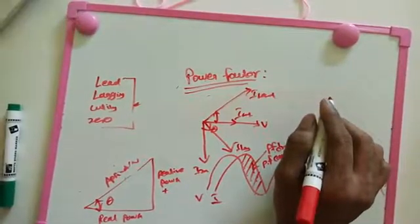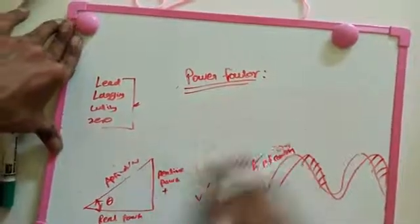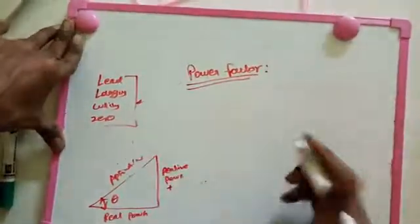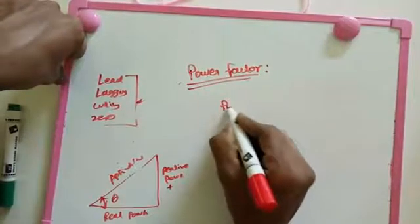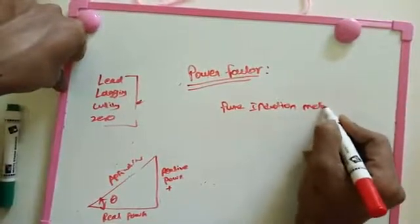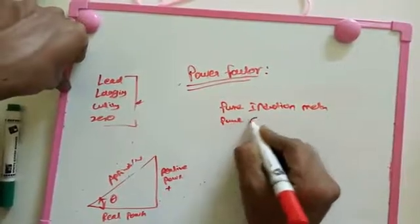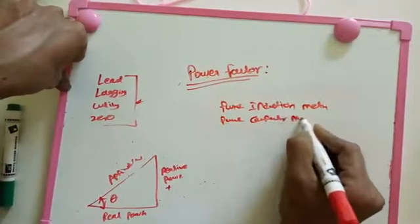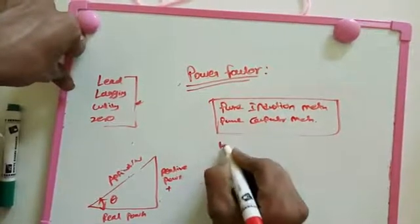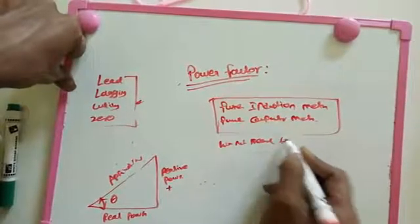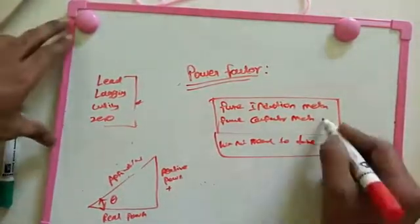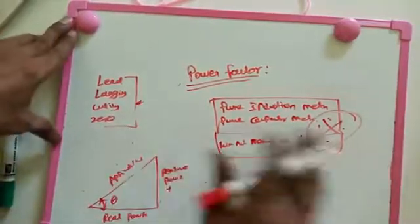Now we are going to see why we cannot simply neutralize the power factor. To neutralize it completely, we would need a pure induction material or pure capacitor material — which is not practically possible. So complete neutralization of power factor is not possible in reality.